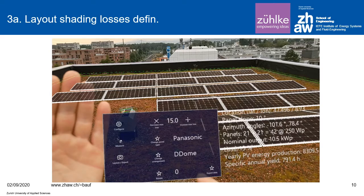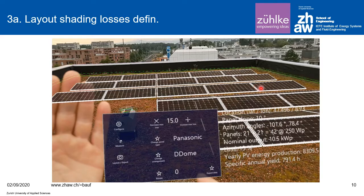Now we reach task 3, searching for the final layout of the PV modules. We choose the type of PV modules and the mounting structure. On the HoloLens screen we see the percentage of allowed shading losses due to the railing and other obstacles. In a few seconds, by changing these numbers, the system will automatically give us choices for positioning the layout of the PV modules.